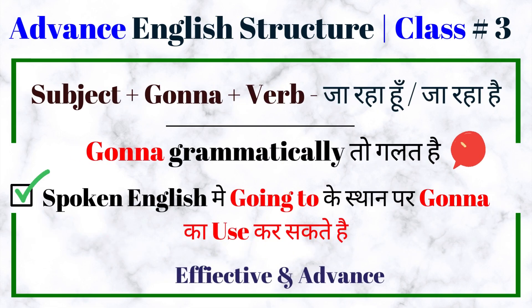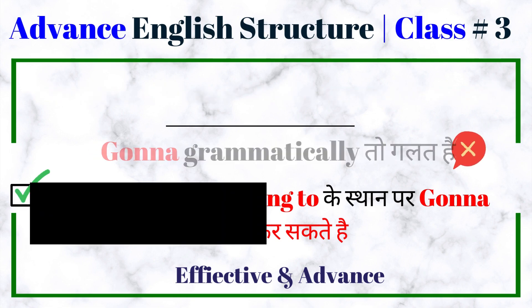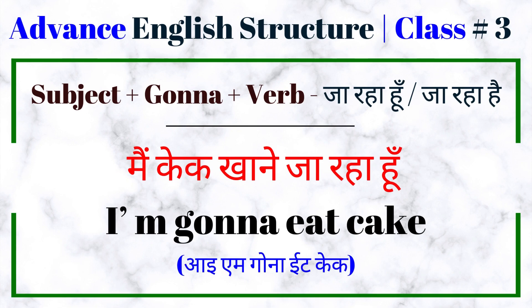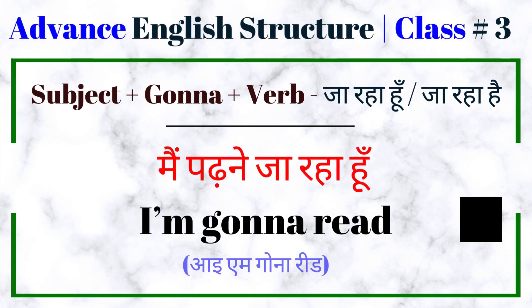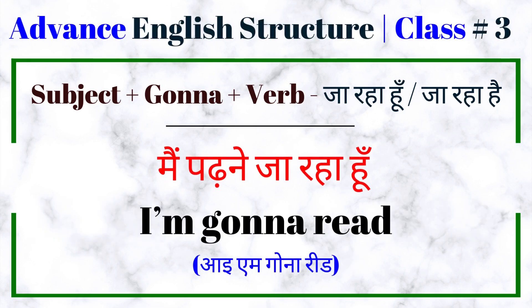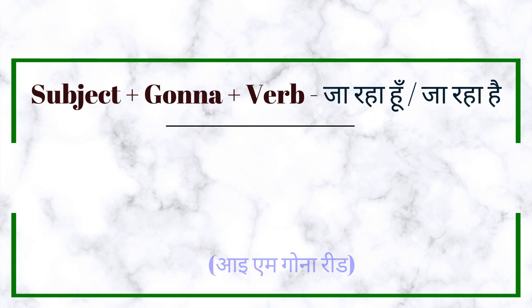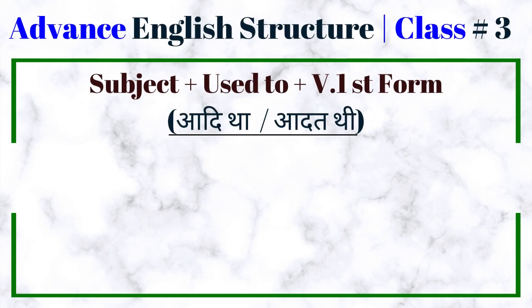Subject plus 'gonna' plus verb. Gana grammatically galat hai, parantu spoken English mein 'going to' ke sthaan par 'gonna' ka use kar sakte hain, taaki aap ki English kaafi effective lage. Main cake khane ja raha hun — I am gonna eat cake. Main padhnay ja raha hun — I am gonna read.